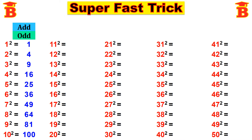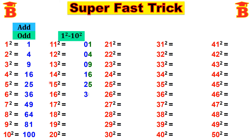Next let us find 11 squared to 20 squared. The first step is we have to write 1 squared to 10 squared. Already we have those values, so just take and write here: 01, 04, 09, then 16, 25, 36, 49, 64, 81, 100.